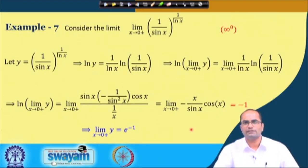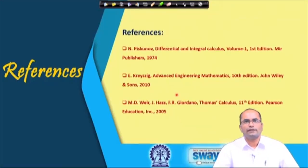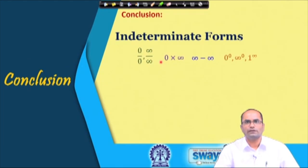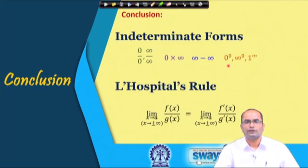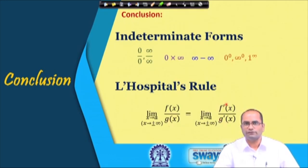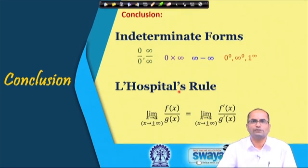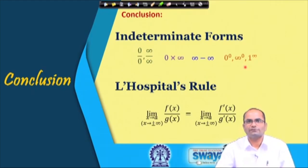We have considered at least one example of each type of indeterminate form. Today we learned about the forms 0×∞, ∞−∞, 0⁰, ∞⁰, and 1^∞. In all cases, we used L'Hôpital's rule, which states that the limit of a ratio of two functions in 0/0 or ∞/∞ form equals the limit of the ratio of their derivatives. That concludes this lecture — thank you very much.